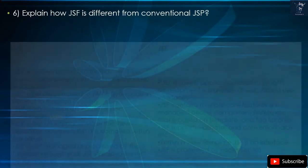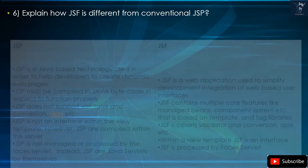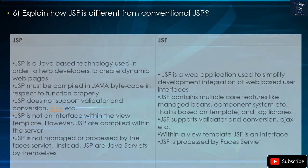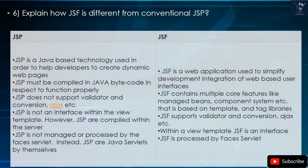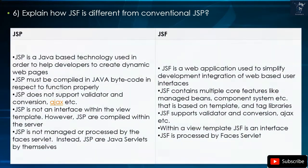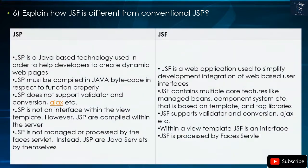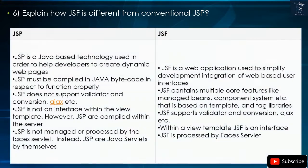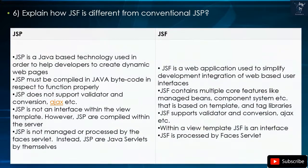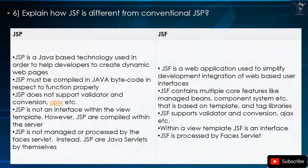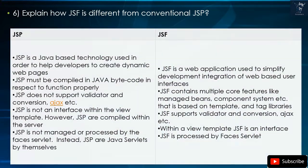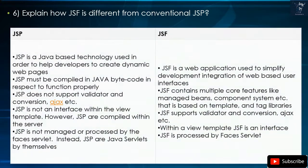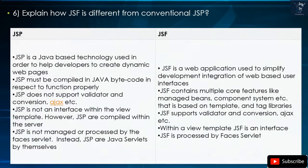Question 6: Explain how JSF is different from conventional JSP. JSP is a Java-based technology used to help developers create dynamic web pages. JSP must be compiled into Java byte code to function properly. JSP does not support validators, conversion, or Ajax. JSP is not an interface within the view template, and JSP are compiled within the server.